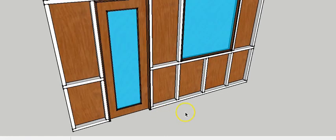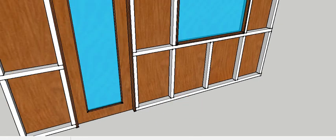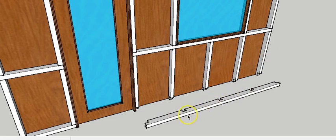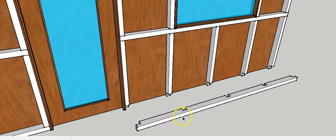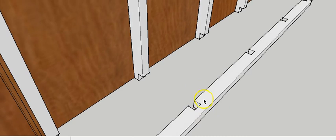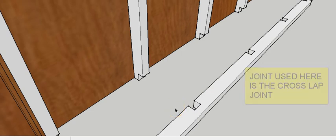Now let's look at the joints. Pulling out the lowermost part of the partition frame, we see it is made out of a member with a width of 75 mm and a height of 50 mm. It has been cut at locations corresponding to the verticals — the cut width is half of 75 mm and the cut depth is 50 mm — forming the cross-lap joint.